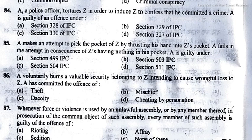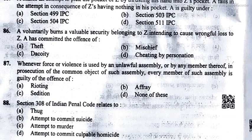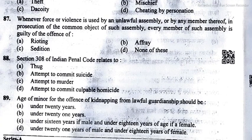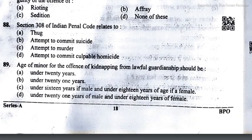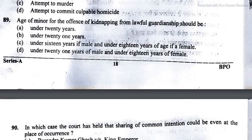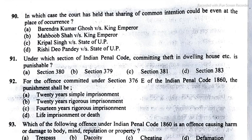Question 86: option B, mischief. Question 87: option A, writing. Question 88: option D, attempt to commit culpable homicide. Question 89: option C — under 16 years if male and under 18 years of age if female. Question 90: option A, Brindar Kumar Ghosh versus King Emperor. Question 91: option A, section 380.